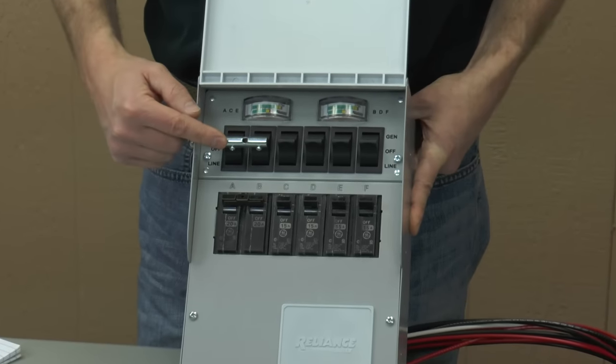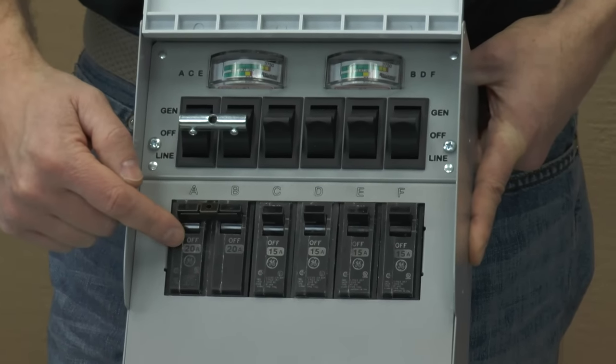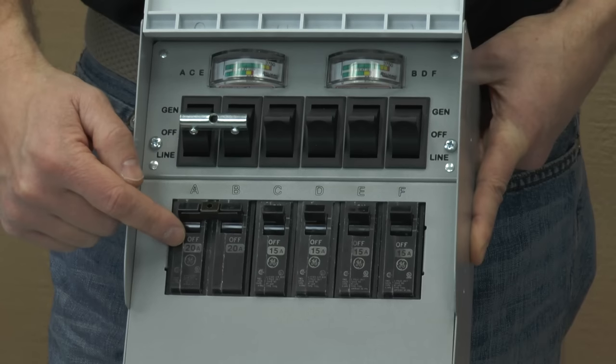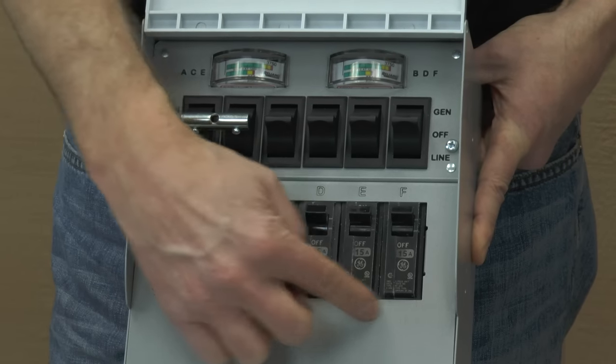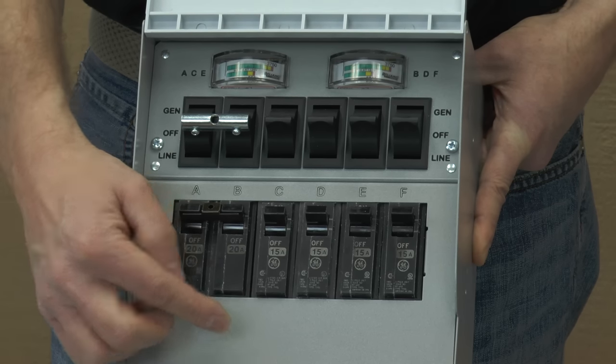These are the switches that transfer power from the utility to the generator and these are the circuit breakers that correspond to each switch. The switches that have 15 amp circuit breakers can be installed on any 15 or 20 amp household circuit.